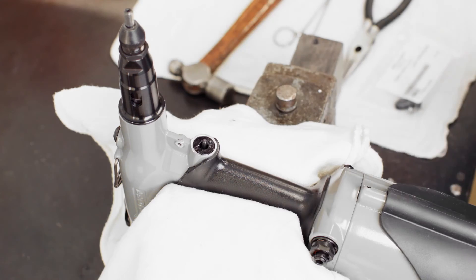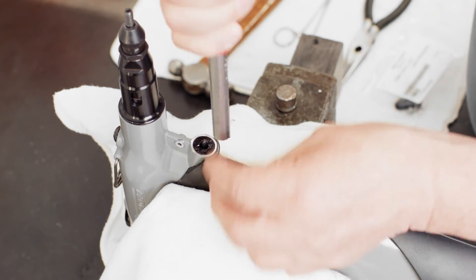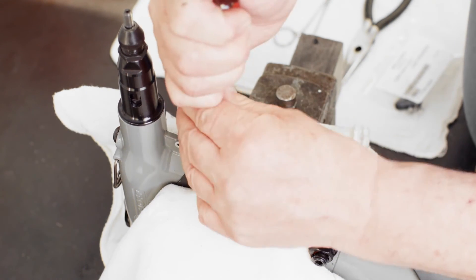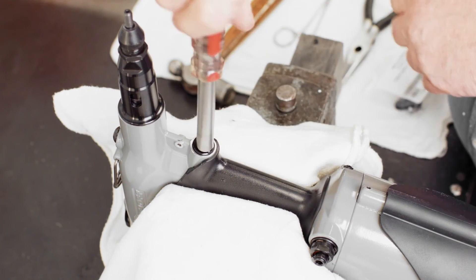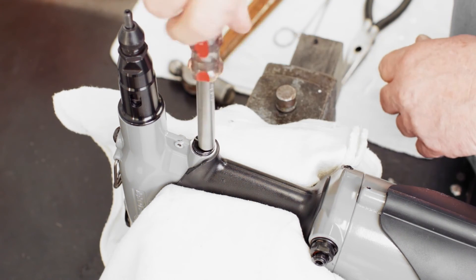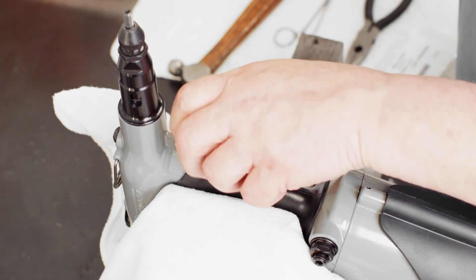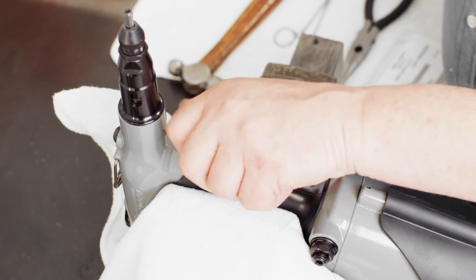After you remove the roll pin, remove the trigger valve with a spanner wrench by turning it counter-clockwise. Remove the spring and O-ring inside.